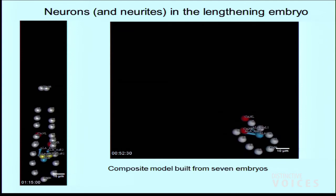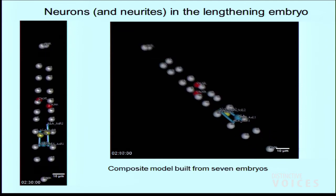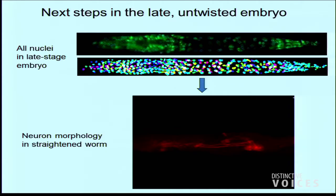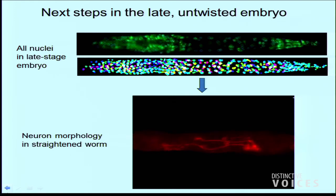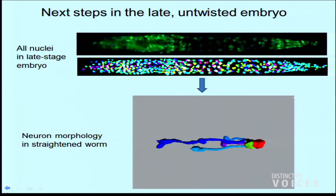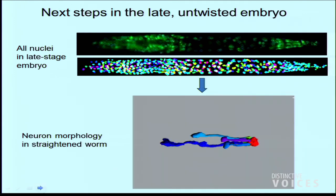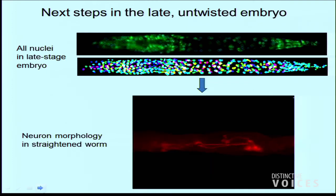We have a lot more work to do — this is just 25 cells; there are 550 in the embryo. Much of my work over the next five years will be filling in as much of this data as I can. Here's a proof of concept showing we can track all of the nuclei in this untwisted animal. Once we have the ball-and-stick positions of all the cells, we then want to segment the data to understand how neuronal morphology all fits together — there's quite a bit of information in the shape of these growth cone structures, and that's one more level of complexity we hope to build into the model.